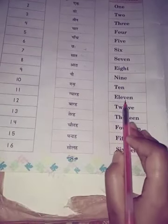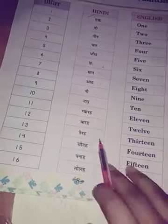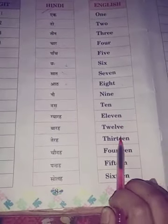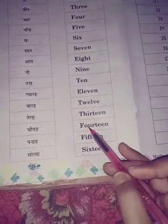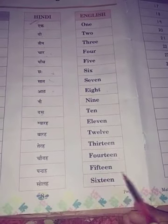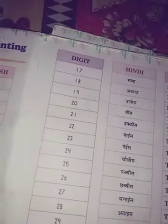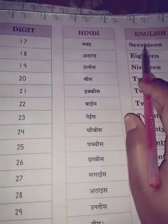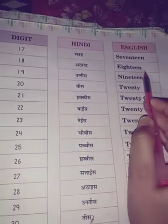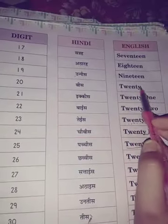Eleven — E-L-E-V-E-N. 11. Twelve — T-W-E-L-V-E. 12. Thirteen — T-H-I-R-T-E-E-N. 13. Fourteen — F-O-U-R-T-E-E-N. 14. Fifteen — F-I-F-T-E-E-N. 15. Sixteen — S-I-X-T-E-E-N. 16. Seventeen — S-E-V-E-N-T-E-E-N. 17. Eighteen — E-I-G-H-T-E-E-N. 18. Nineteen — N-I-N-E-T-E-E-N. 19. Twenty — T-W-E-N-T-Y. 20.